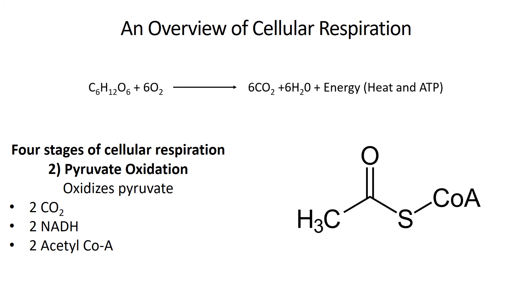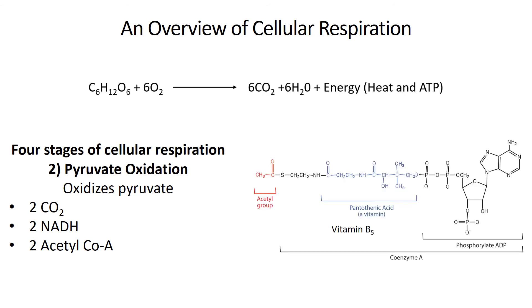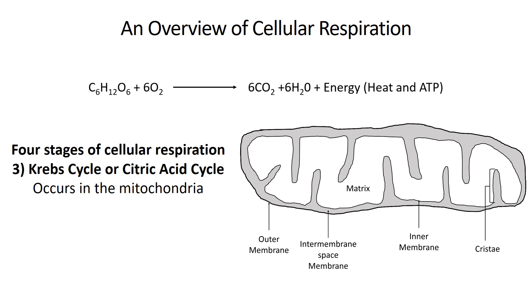Here's the acetyl CoA. You can see there's a methyl group and a carbonyl group. The S is for sulfur, and coenzyme A is a very large molecule that will take those two carbons into the Krebs cycle. Acetyl coenzyme A is a very large organic molecule — on the right you see the phosphorylated ADP, part of a nucleotide, and pantothenic acid, which is actually vitamin B5. Way out to the left you'll see the acetyl group with the two carbons remaining from the oxidation of pyruvate. Acetyl CoA is very important because it brings those two carbons to the Krebs cycle, which also occurs inside the matrix of the mitochondria.